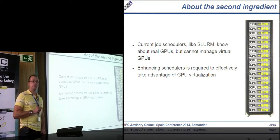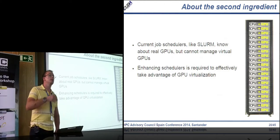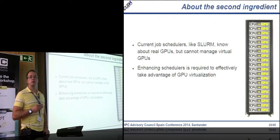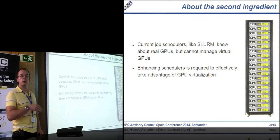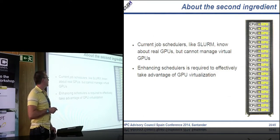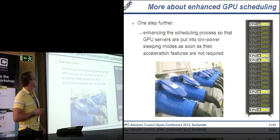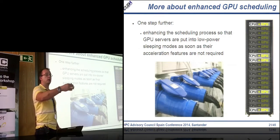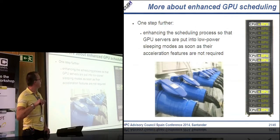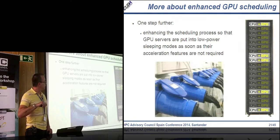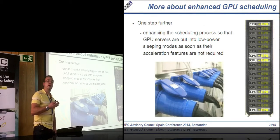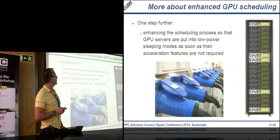The second ingredient is enhancing schedulers to deal with remote GPUs. Current schedulers like SLURM handle local GPUs efficiently but cannot deal with remote GPUs. Once we are modifying SLURM, we can also enhance it to detect when a remote GPU box is idle and switch it off, keeping only GPU boxes with active workload running. In this way we save a lot of energy.